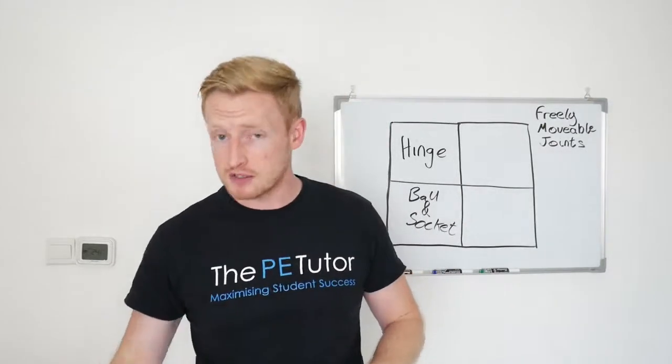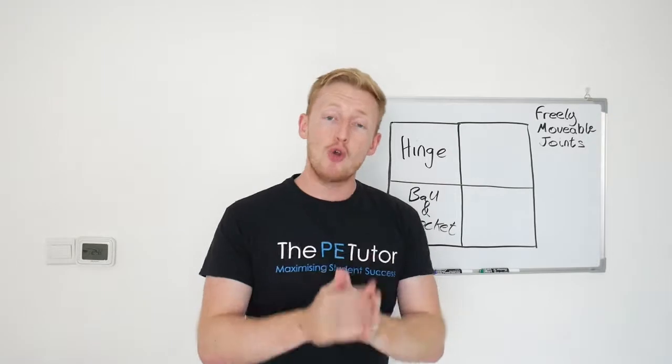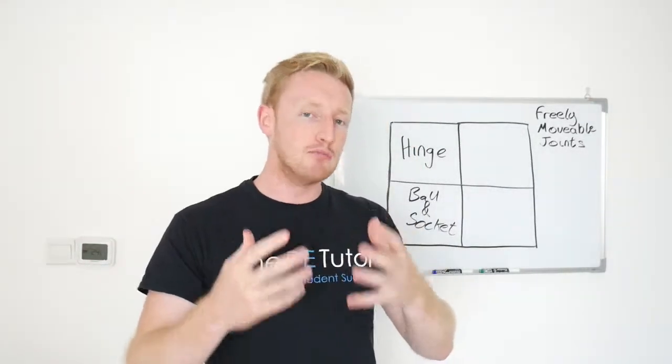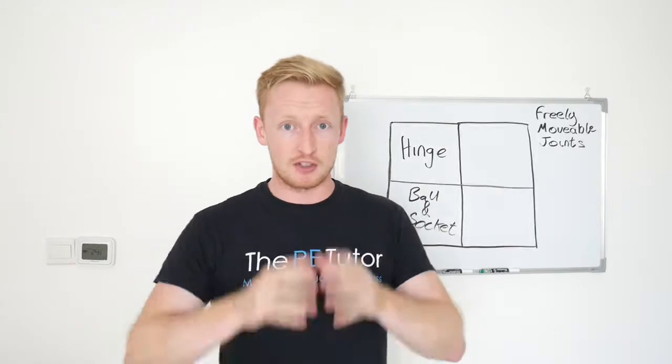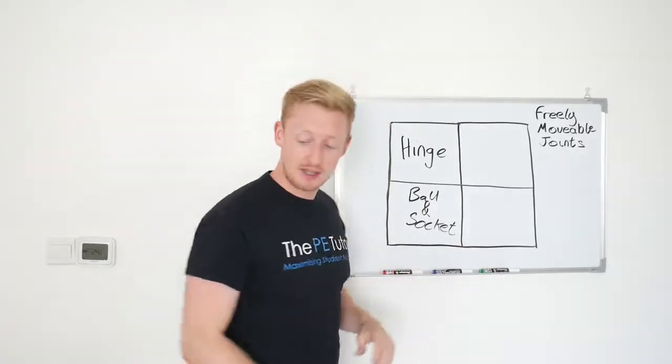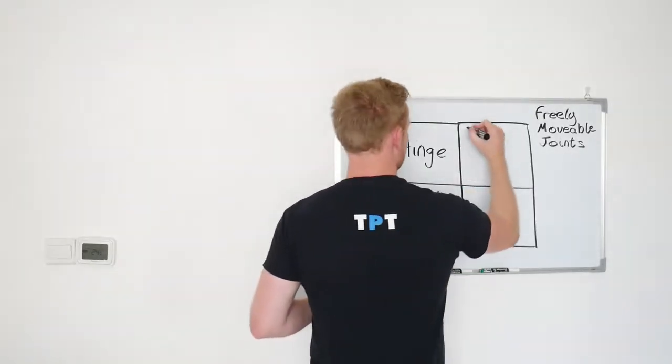Now the one that we can do first is the hinge joint. It only allows, just like a door with a hinge, movement forwards and backwards. So one plane of movement, two directions, forwards and backwards.